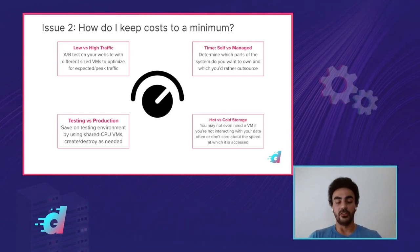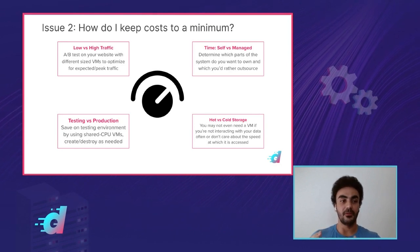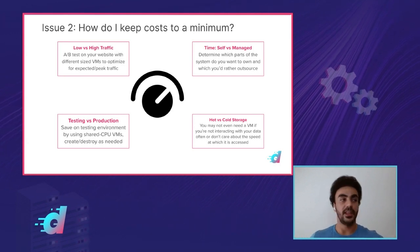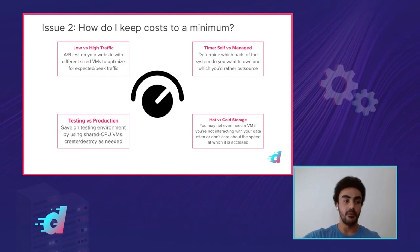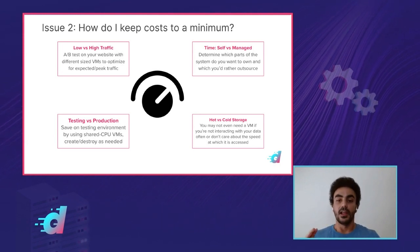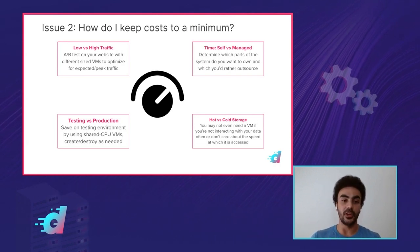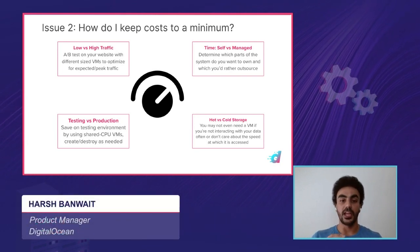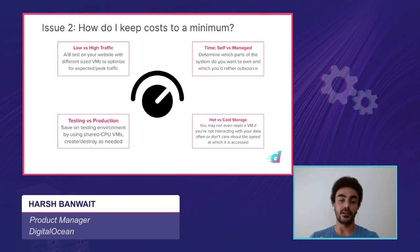Last is hot versus cold storage. This is something where you might not even need a VM if you're not accessing your data all that often. The analogy I like to use: I have certain things on my desk — things I want to access frequently, like my pen, notebook, or coffee cup — and things in my closet that I access less often. Think about putting data you don't access as often into colder storage. It's going to be cheaper, it takes a little more time to retrieve that data, but if you don't care about peak performance or timing, it's something worth considering.